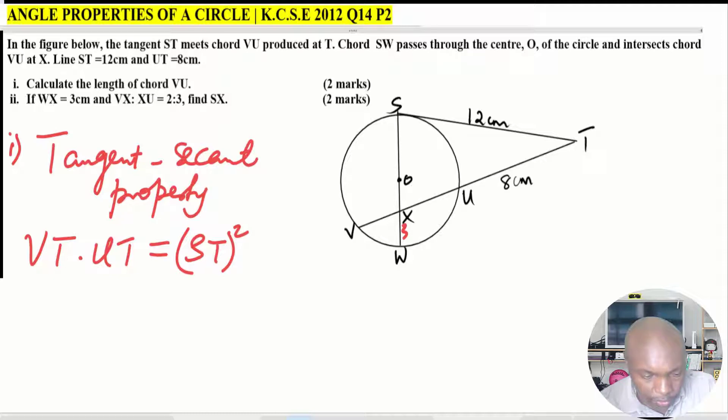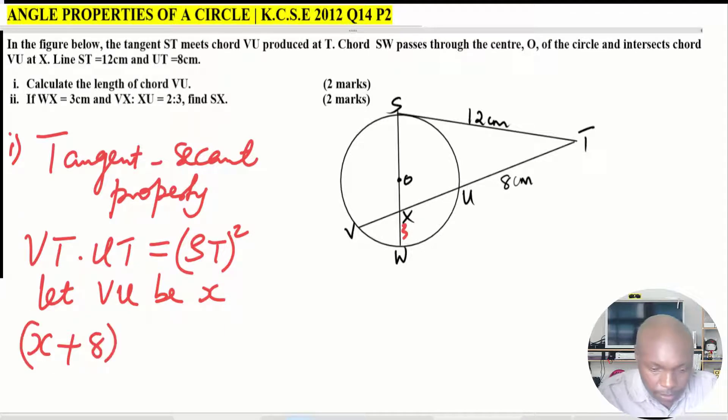ST is given as 12. What we don't have here is VU, so we can let VU be x. We can write the property: VT, if VU equals x, therefore VT will be x plus 8, then multiply by UT.